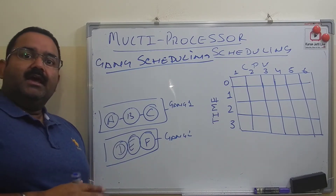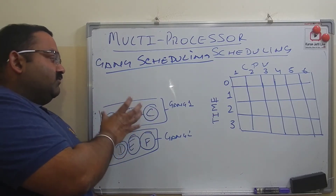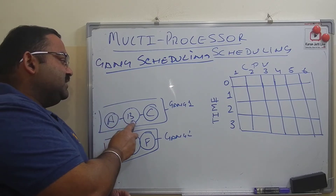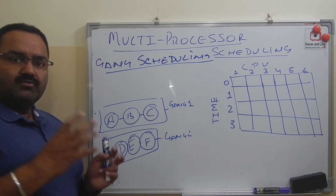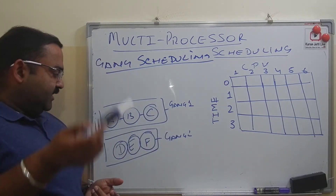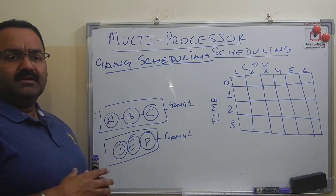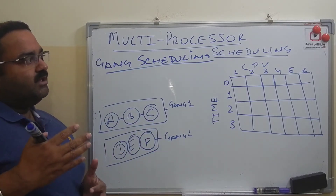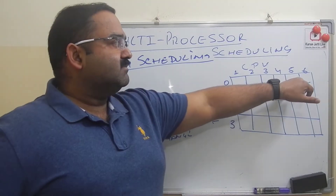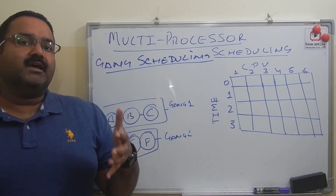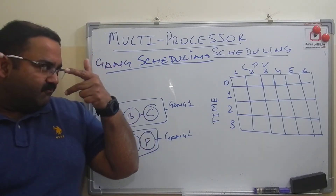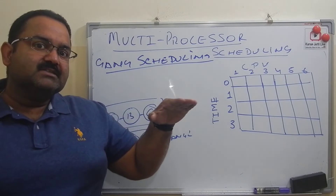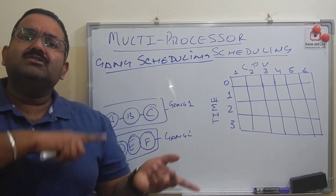In gang scheduling, we join the related processes together as a single gang. For example, processes A, B, and C are related, so we combine them to make gang 1. Processes D, E, and F are also related, so we group them into gang 2. We then divide the CPU time into time slices and give one time slice to each gang. Each gang executes for that period of time, and when the time slice is over, the next gang executes.